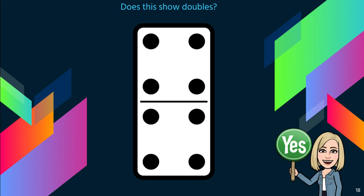Does this show doubles? Yes. So this is how it's shown on a domino. Four on the top and four on the bottom. So remember, doubles are the same.